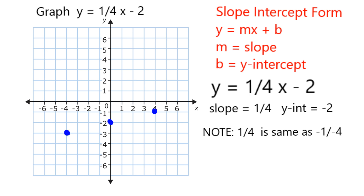So what I now have are three points that graphically represent solutions to this equation. For example, if I put negative 4 in for x, 1 fourth times negative 4 is equal to negative 1. Negative 1 minus 2 is negative 3. And the y value of this point is negative 3. That's going to be true for each of these points. The x and y values give solutions to the equation — values which make it true.